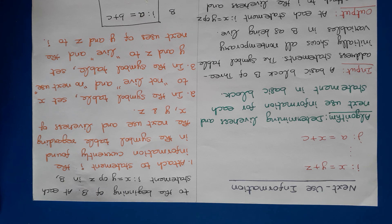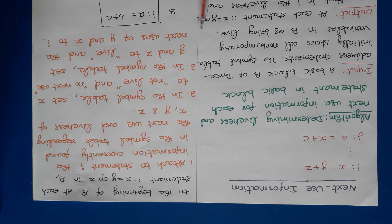Hello everyone. In this video we are going to discuss next use information about names in basic blocks. If the name in a register is no longer needed, then that register can be assigned to some other name. In other words, if the name is having next use, then that register cannot be allocated to some other name because we are going to use it in future.